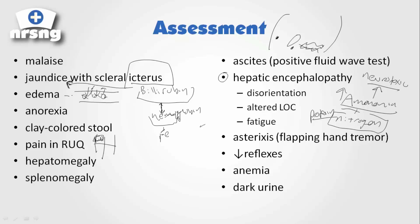Another thing we might see in our patients is asterixis — that is a flapping of the hand; you'll see their hand kind of tapping like they're almost trying to do Morse code. We'll also see decrease in reflexes, anemia, and darkened urine. So those are going to be some of our assessment findings.